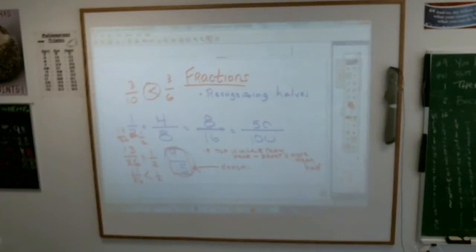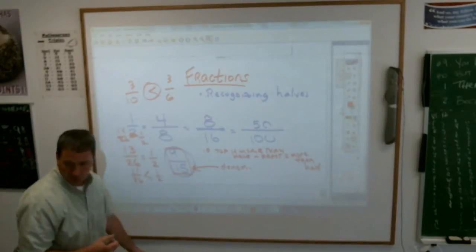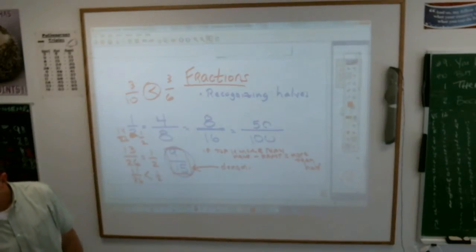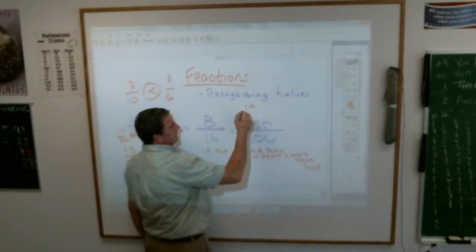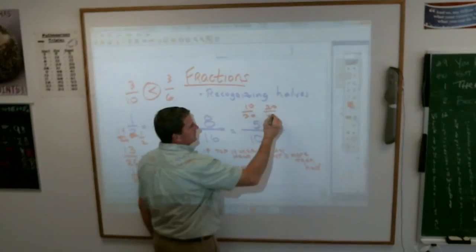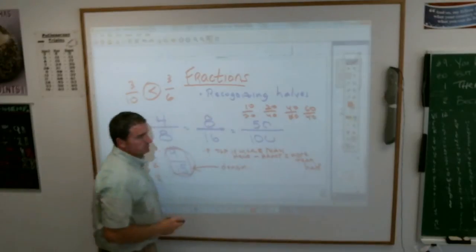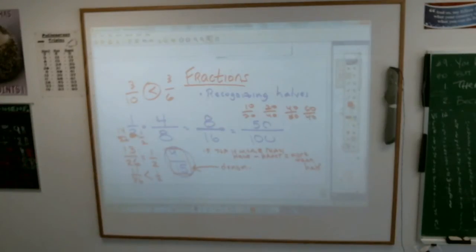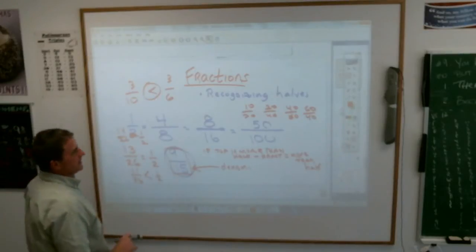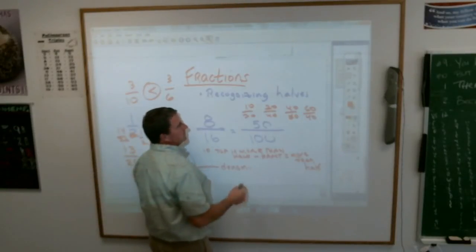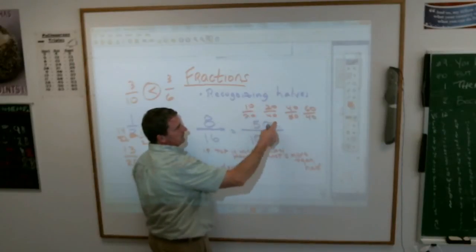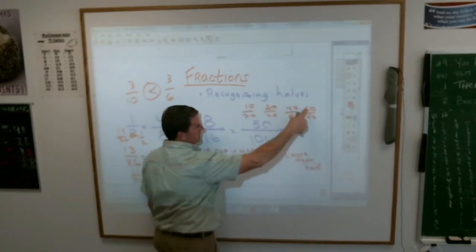Or they might ask you on problem number 26, which problem did not equal a half? There are three choices. Your four choices were 10-20, 20-40, 40-80, or 60-40. Which one does not equal a half? Right, because this is half. 10 is half of 20, 20 is half of 40, 40 is half of 80, 60 is not half of 40.